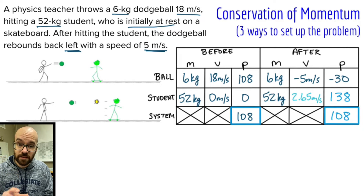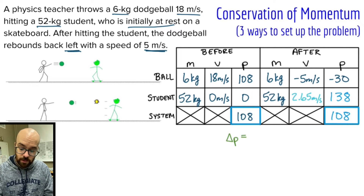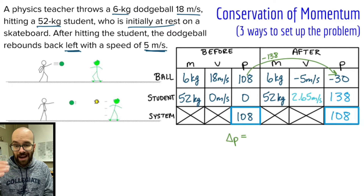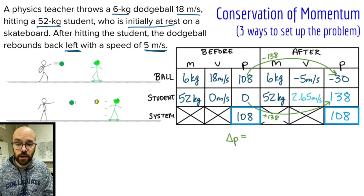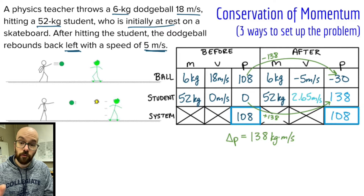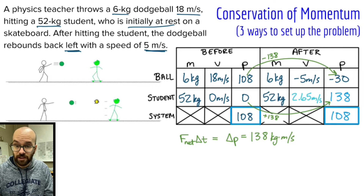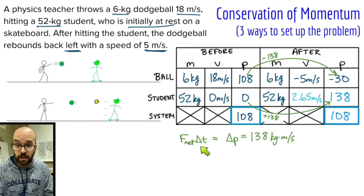One more thing to point out: you can easily find the change in momentum of the student and the ball from this data. Delta P — or change in momentum — for the ball: it went from 108 to negative 30, that's a change of minus 138. The momentum of the student goes from 0 to 138, that's an increase of plus 138. In some problems you may need to calculate the impulse, the net force, or the duration of the collision. Since F_net times delta t equals the change in momentum, you can quickly incorporate that if needed.